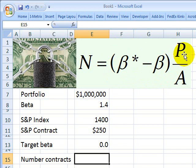This fraction is the value of the portfolio denoted by P, divided by the current value of the stock's underlying one futures contract denoted by A.